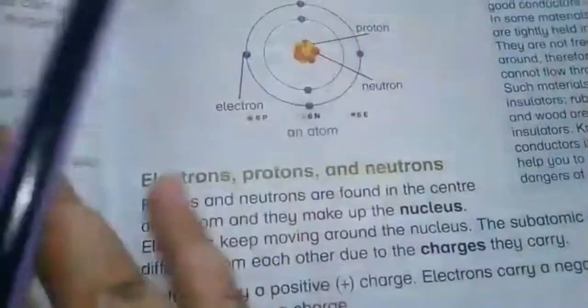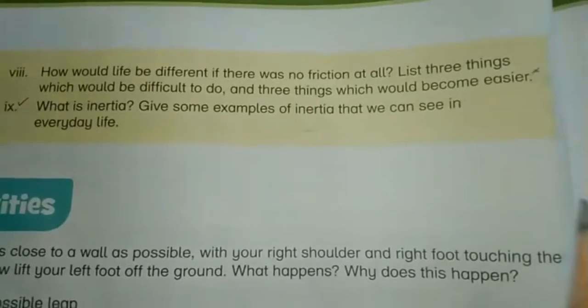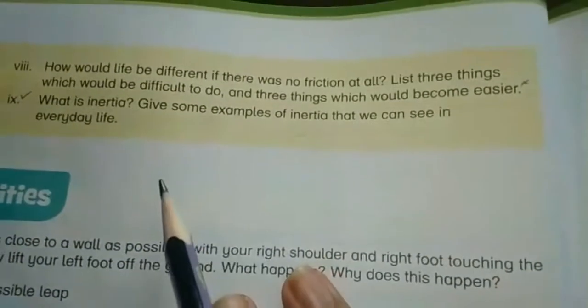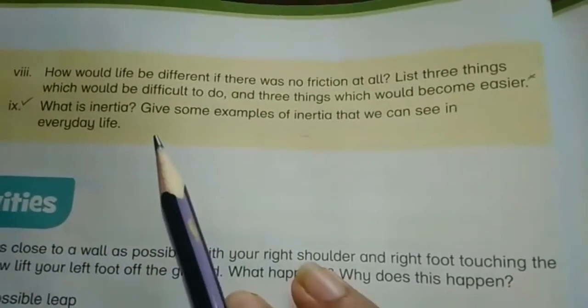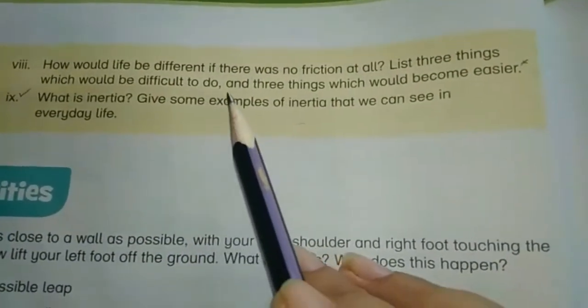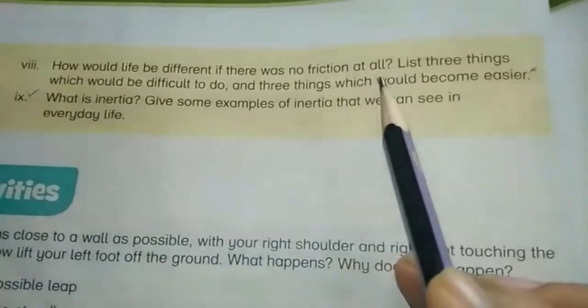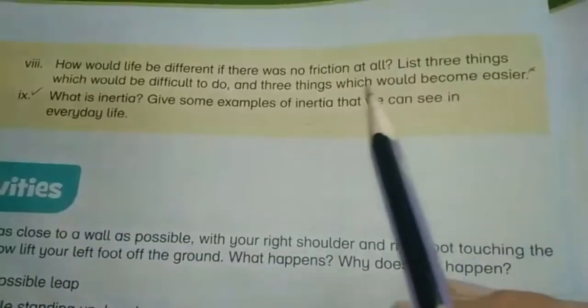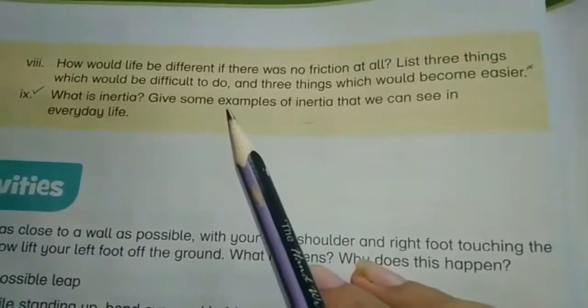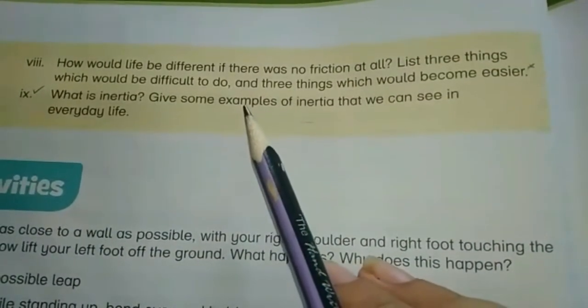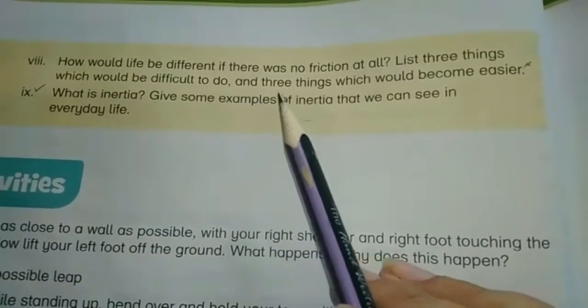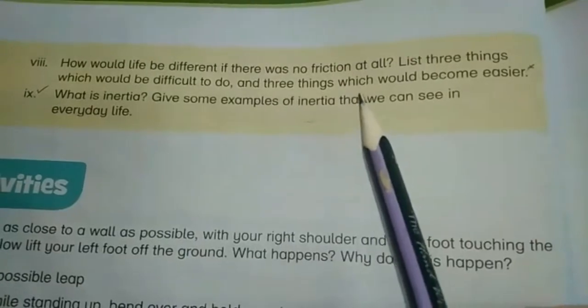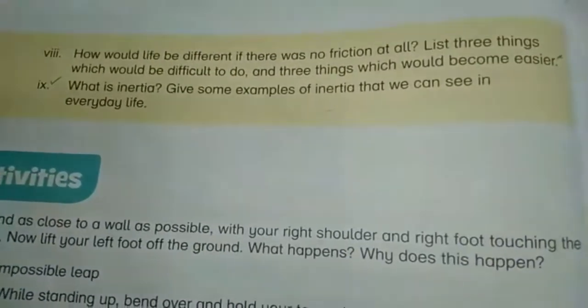Next, question number 5, part 8: How would life be different if there was no friction at all? List three things which would be difficult to do and three things which would become easier.